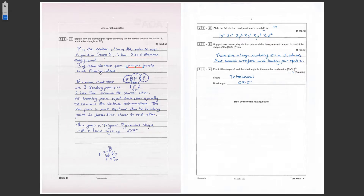A dot-and-cross diagram helps here since a picture speaks a thousand words. This means there are three bonding pairs and the leftover two electrons form one lone pair around the central atom. All bonding pairs repel each other equally and maximize the distance between them — it's really important to state that. Then, the lone pair is more repulsive than the bonding pairs, so this forces the bonding pairs closer to each other.